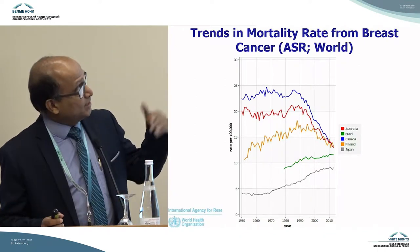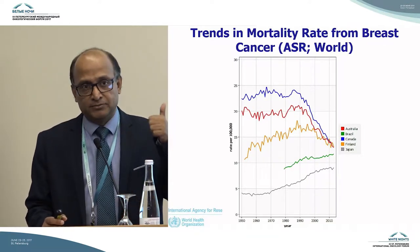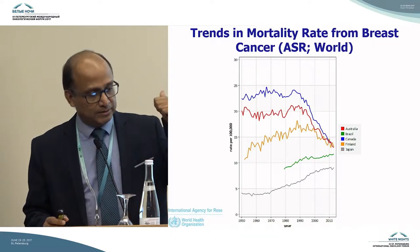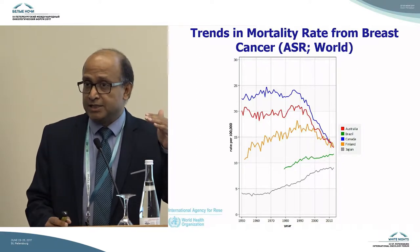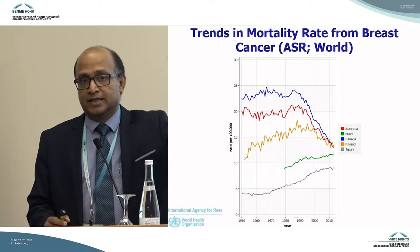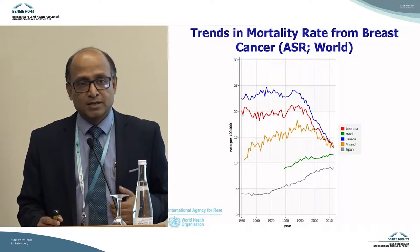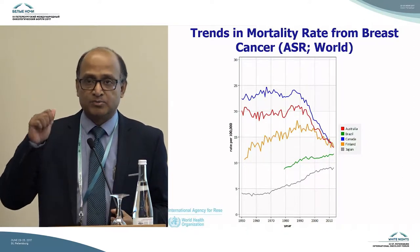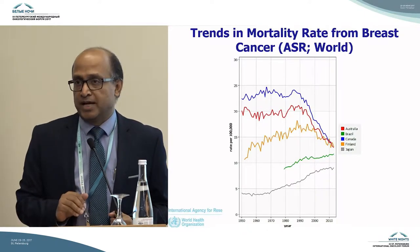For example, this is what happened with breast cancer screening introduction in many countries. For example, Canada, Australia — when they introduced organised population-based breast cancer screening, the mortality from breast cancer came down. Whereas the countries which could not introduce organised population-based cancer screening, the mortality went up and up.